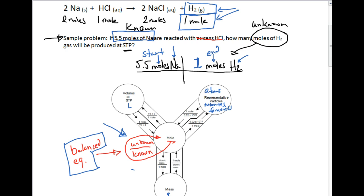On the mole road, we put the known on the bottom. Our known was Na — moles of sodium. Looking up to the balanced equation, sodium has a coefficient of 2, so I put 2 on the bottom. This becomes our setup. We cancel units: moles of Na on top cancels with moles of Na on the bottom. Then we multiply 5.5 by 1 and divide by 2.